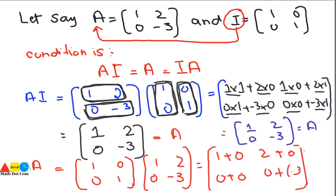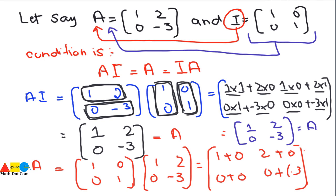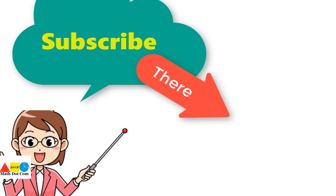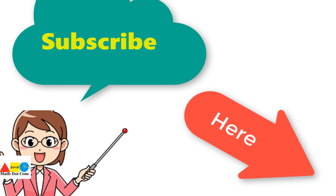This means whether we multiply the identity matrix with the given matrix first, or the given matrix with the identity matrix, it doesn't matter — we get the original matrix as it is. This confirms that I is the multiplicative identity of A. The condition A×I = I×A = A must be satisfied to find the multiplicative identity of a matrix. In real numbers we have one, and in case of matrices we always have an identity matrix that when multiplied gives the original matrix. Thank you for watching — please subscribe to our channel math.com for more updates.